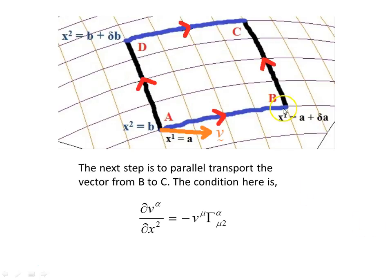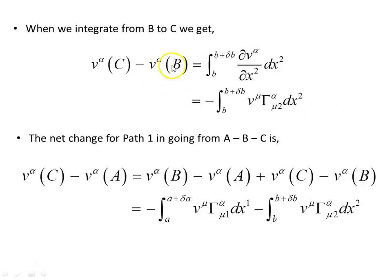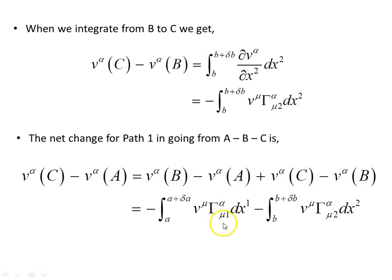The next step is from B up to C. Here the condition is dv_alpha/dx2, since we're now moving in the x2 direction, equals minus v_mu times the change in the basis vectors. Integrating from B to C gives the value of the vector at C minus the value of the vector at B, which for a very small distance is a reasonably good approximation equal to that integral. So the net change for path one, going from A to B to C, is v(C) minus v(A), equal to the change from A to B plus the change from B to C.